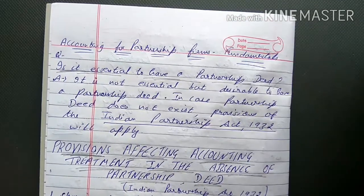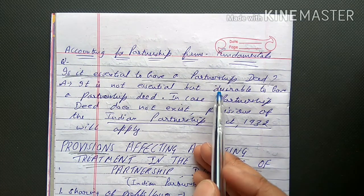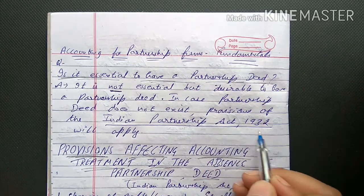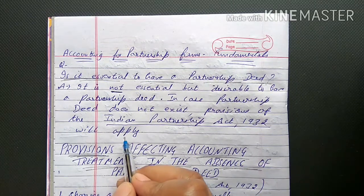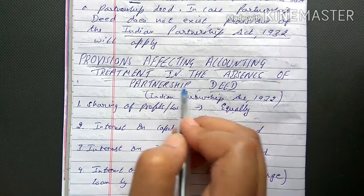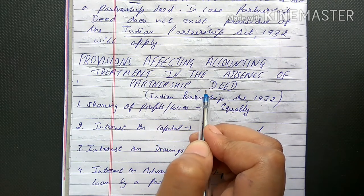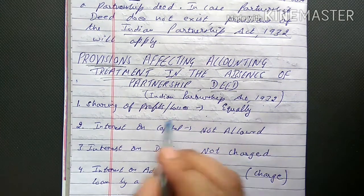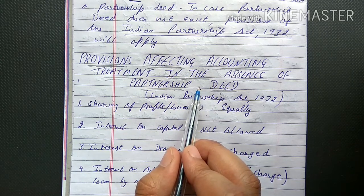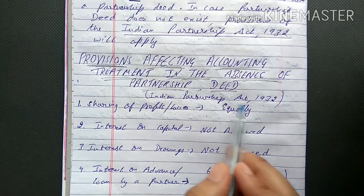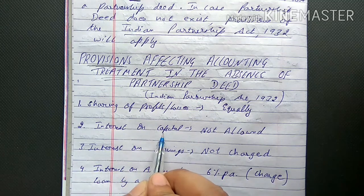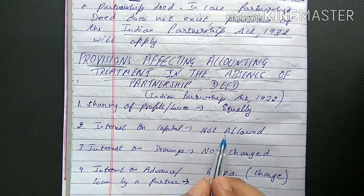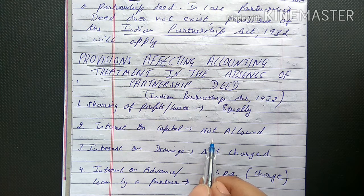Let us recap what we studied in this video. First, we learned that a partnership deed is not compulsory, but having one is beneficial. If no deed is made, the Indian Partnership Act 1932 will automatically apply to that firm. Second, we studied the provisions affecting accounting treatment in the absence of a partnership deed — the rules and regulations given under the Indian Partnership Act 1932.